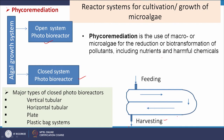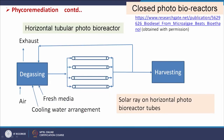In the open system the algae are in contact with air, but in a closed system they are enclosed in a vessel. Closed photobioreactors include vertical tubular, horizontal tubular, flat panel, and plastic bag systems. In the horizontal tubular photobioreactor, the reactors are arranged in parallel. Wastewater passes through the tubes where algae grow, then comes out for harvesting, yielding algal biomass and treated wastewater.